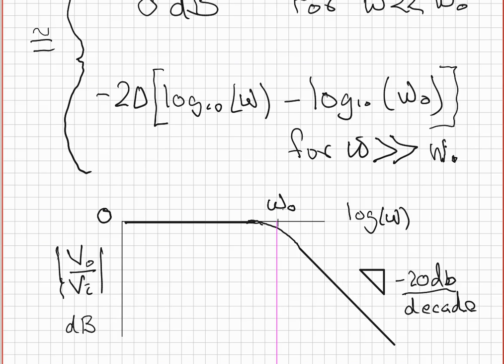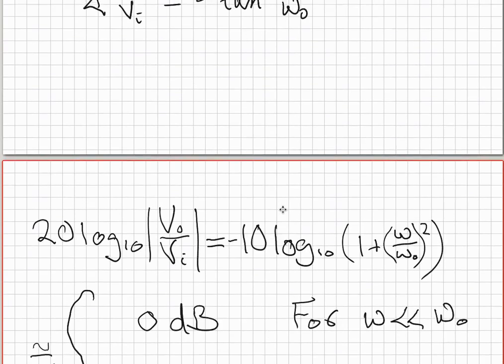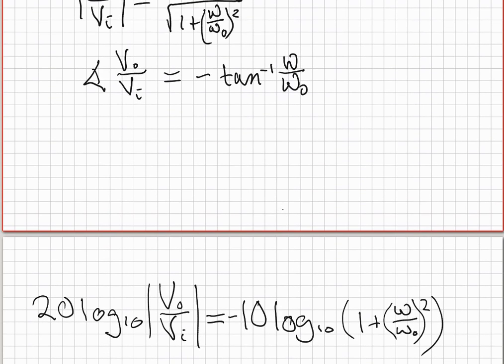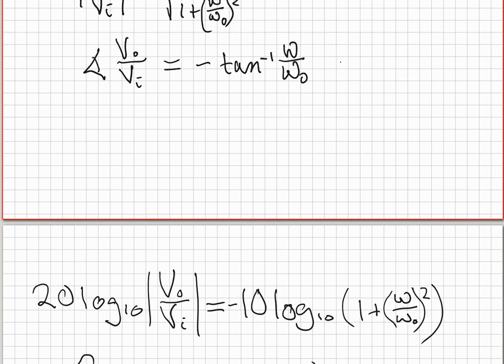Now let's look at the phase plot. Here's the phase expression: it's minus the arctangent of omega over omega zero. You can see what's happening—when omega is very small, this is the arctangent of a very small number, which is very close to zero. So for omega much much less than omega zero, this looks like a line basically at minus zero degrees.